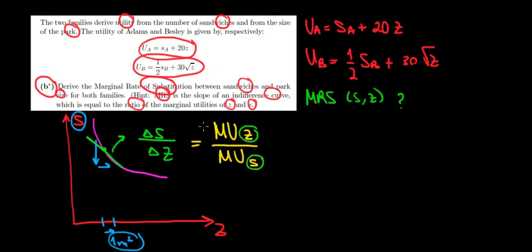Now, with this in mind, we can calculate the MRS, because this ratio is the MRS and we want to do it for both families. We want to do it for the Adams and for Bessley. So let's do it.